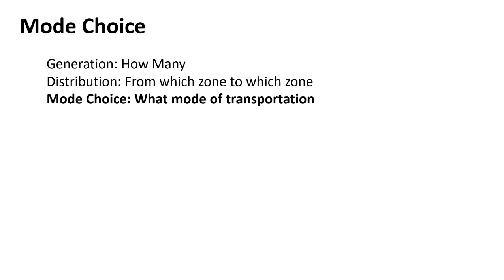The next step is how are you going to get there? You want to go from your house to go shopping — are you going to ride your bike, walk, take a car, take transit, or use ride share? That's mode choice. It's heavily dependent on what you have available. If you don't own a car, you're more likely to take transit, ride share, or walk if it's close enough. Distance is a big factor — you're probably not going to walk five miles.